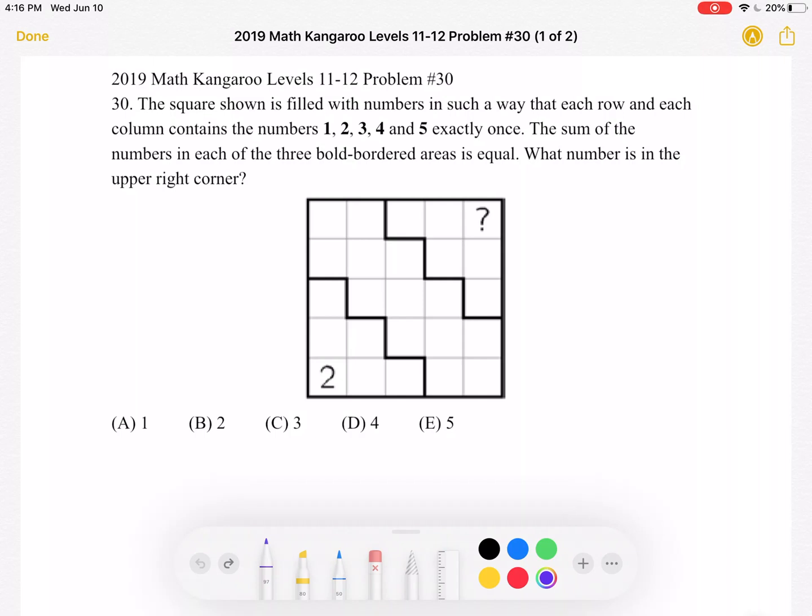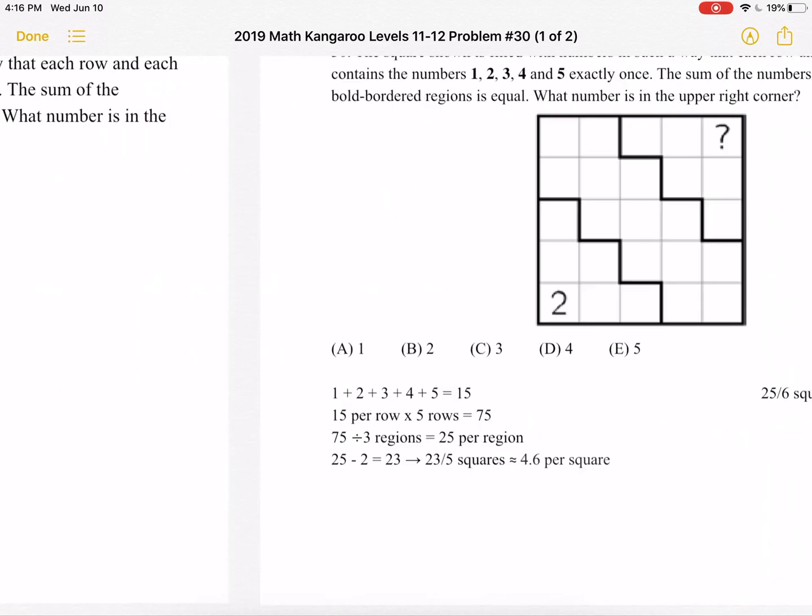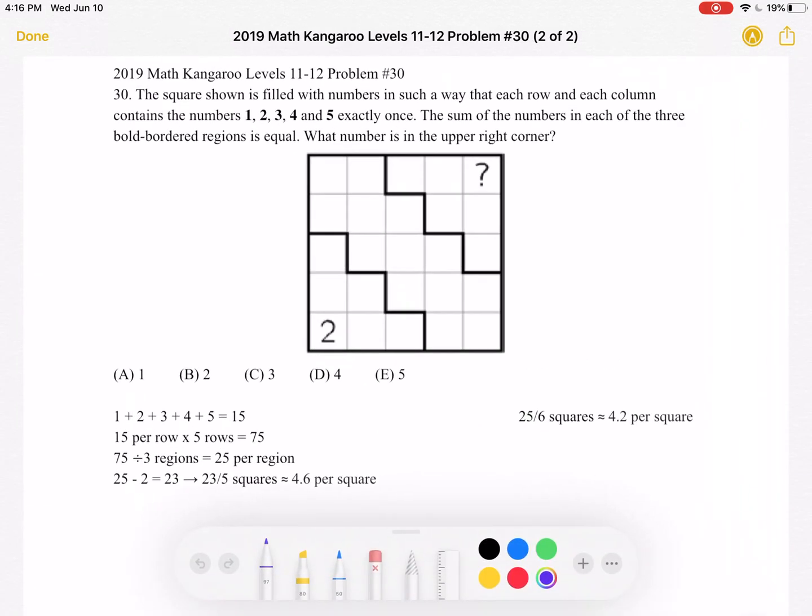The sum of the numbers in each of the three bold bordered areas is equal. What number is in the upper right corner? A, 1, B, 2, C, 3, D, 4, or E, 5. This is the problem as it originally appeared on the test, and here is where we will be doing the solution.